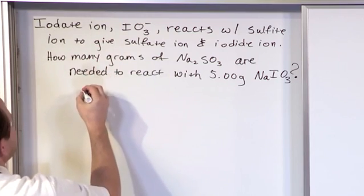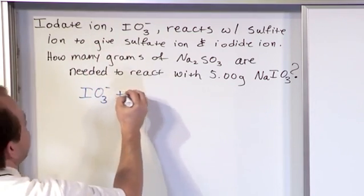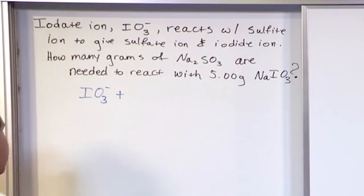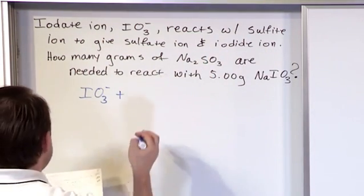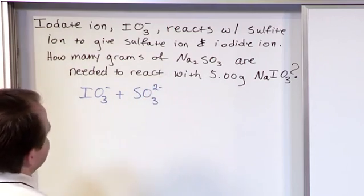So it says the iodate ion, IO3, reacts with the sulfite ion. So you need to go off and look in your book and figure out that the sulfite ion is SO3 and has a charge of negative two.